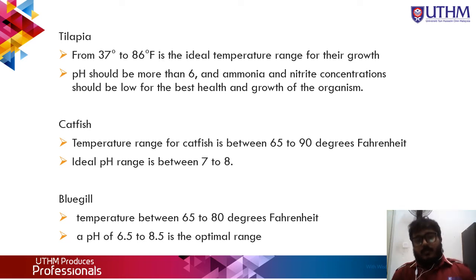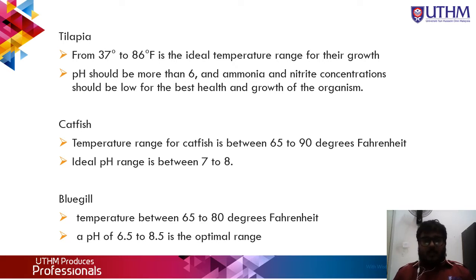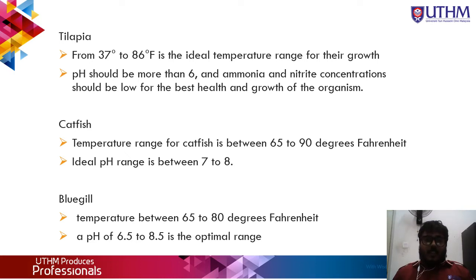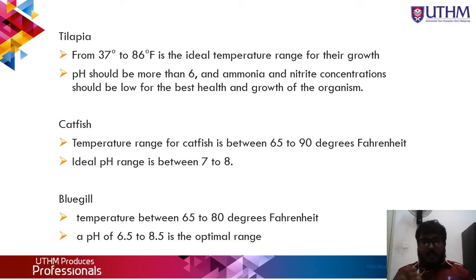The third fish is bluegill. Because of their ability to withstand a wide range of temperatures and the delectable flesh they produce, bluegills are an excellent choice for home aquaponics gardeners looking to grow crops and raise fish in a sustainable way. As a general rule, you want to keep the water temperature between 65 to 80 degrees. The optimal pH range for bluegill is 6.5 to 8.5, and dissolved oxygen should be at least 5 milligrams per liter.